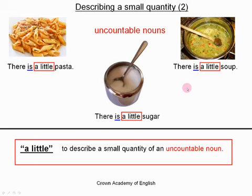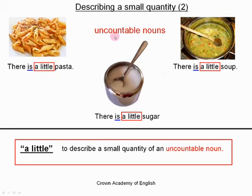To summarize, these two rules are easy. It is easy to know when we use 'a little' and when we use 'a few' if we know the difference between an uncountable noun and a countable noun. So when you learn a new noun, you must also learn if it is countable or uncountable.